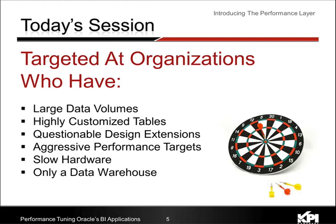Other customers have very aggressive performance targets — needing everything on every single page to come back in five to ten seconds all the time, with anything worse being unacceptable. In a relational OLAP environment, that's not necessarily the easiest thing to achieve. Finally, slow hardware — performance comes from a handshake agreement between design, software, and actual hardware. Sometimes your deployment is on slower hardware and your hands are tied. You're on a shared storage area network with bad latency, but you've still got to make it work to your users' expectations.